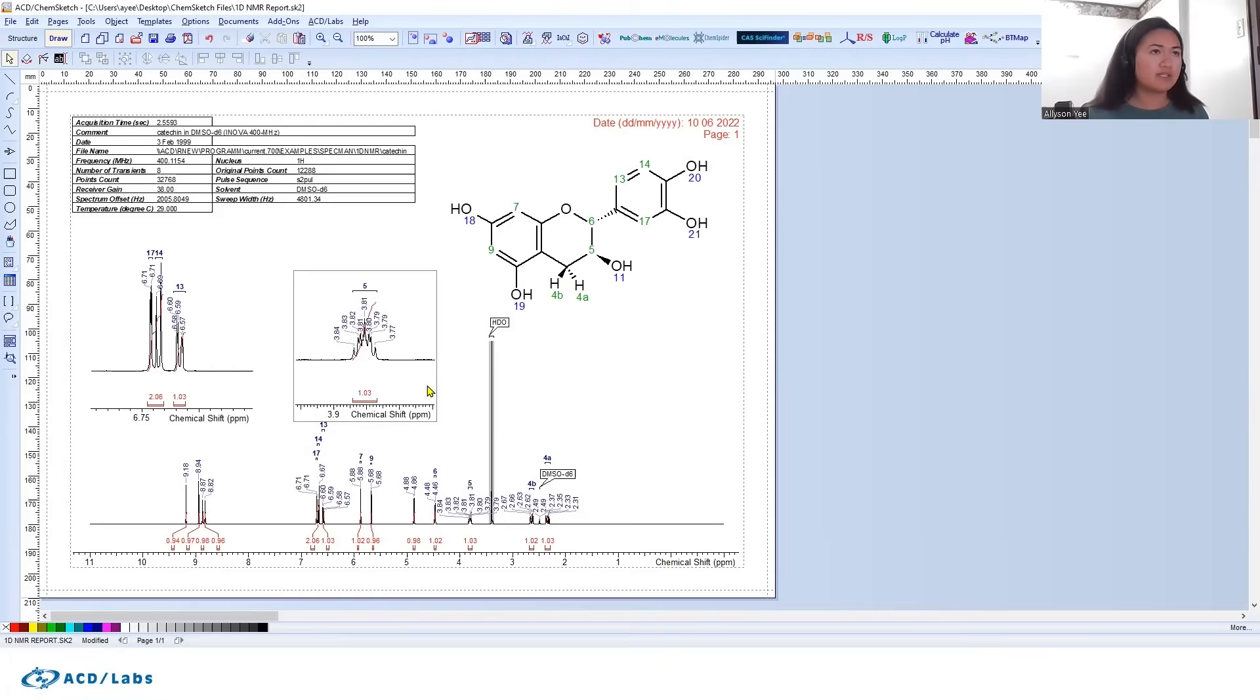You can very clearly see this multiplet, you can see the way it's being split, and you still have the chemical shift and area shown right below it. That's something we find that a lot of people like in reporting with ChemSketch.